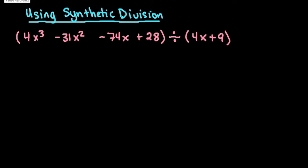For this video we're going to use synthetic division when the leading coefficient of the linear term is not 1. The starting process is still the same — you want to make sure all of your terms go down in order of exponents: 3, 2, 1, 0.